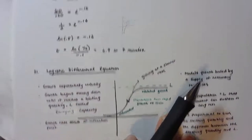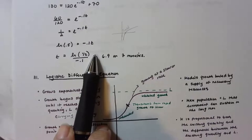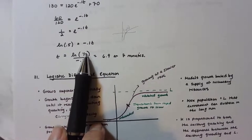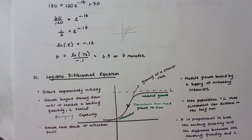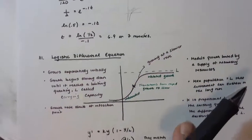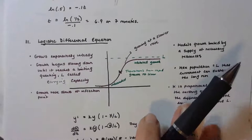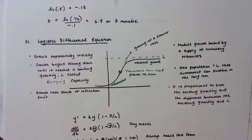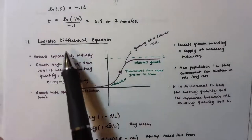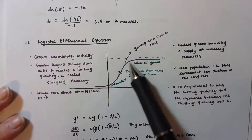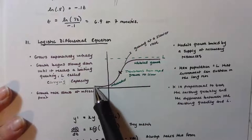Now we get to the logistic differential equation — this is very important and could easily appear on your AP exam. This is especially relevant today because coronavirus is following this model. The logistic curve is an S-shaped curve that starts by increasing rapidly, reaches an inflection point, then continues increasing but at a slower rate — transitioning from concave up to concave down.